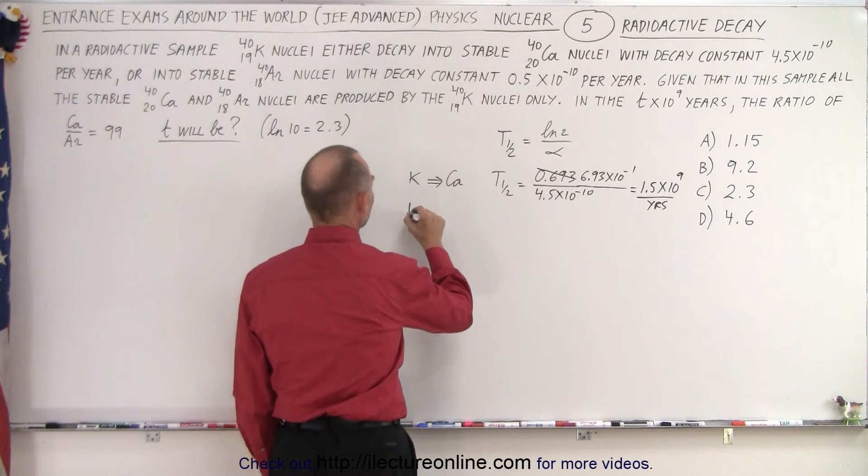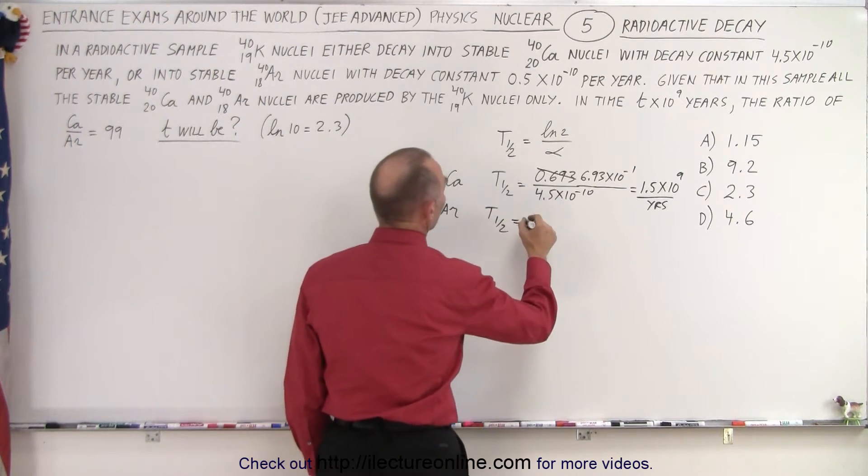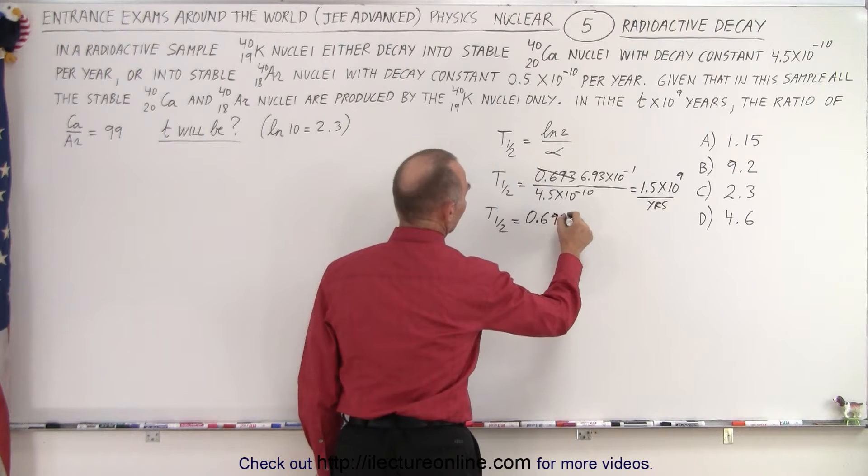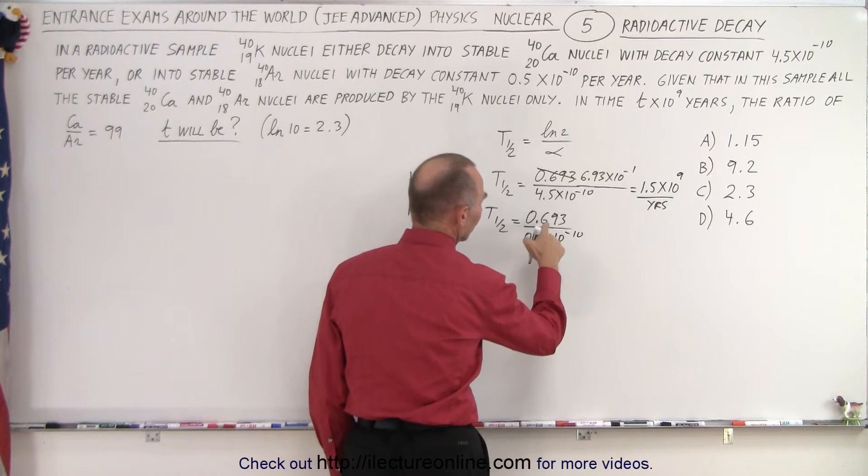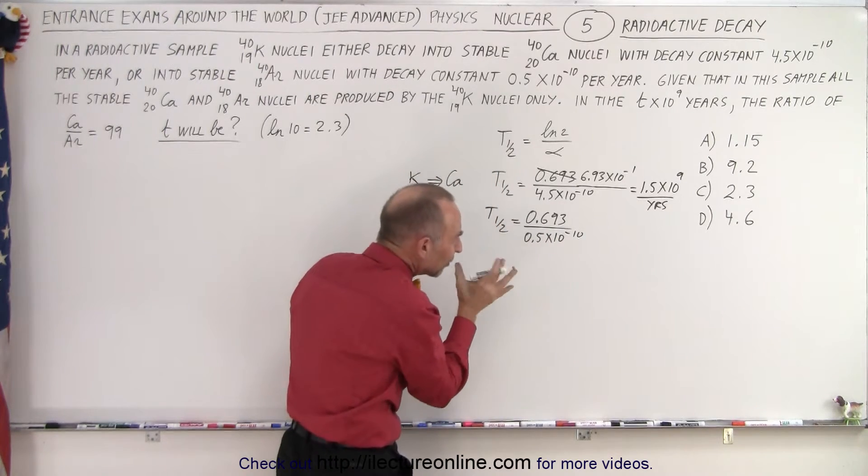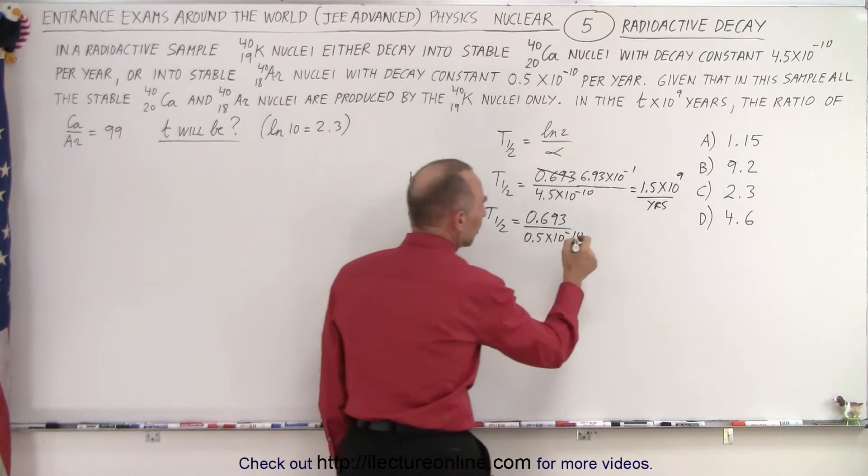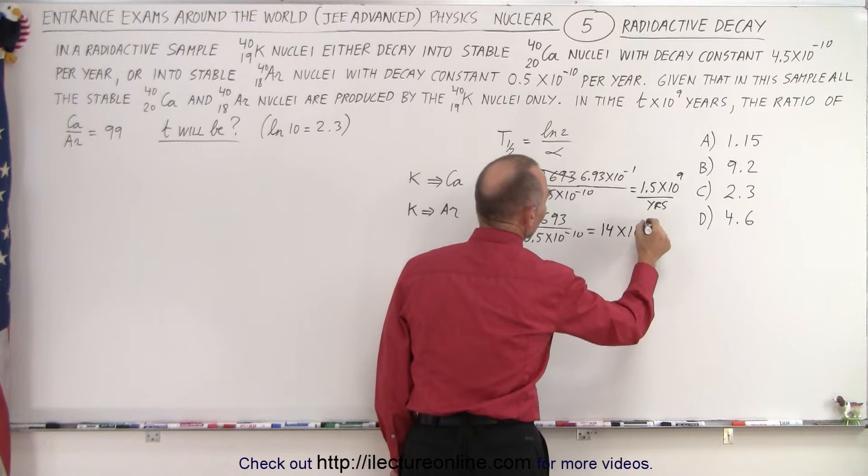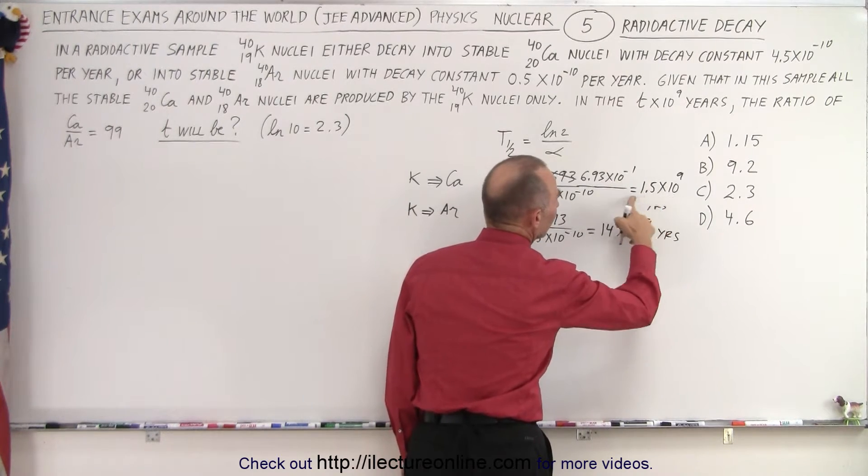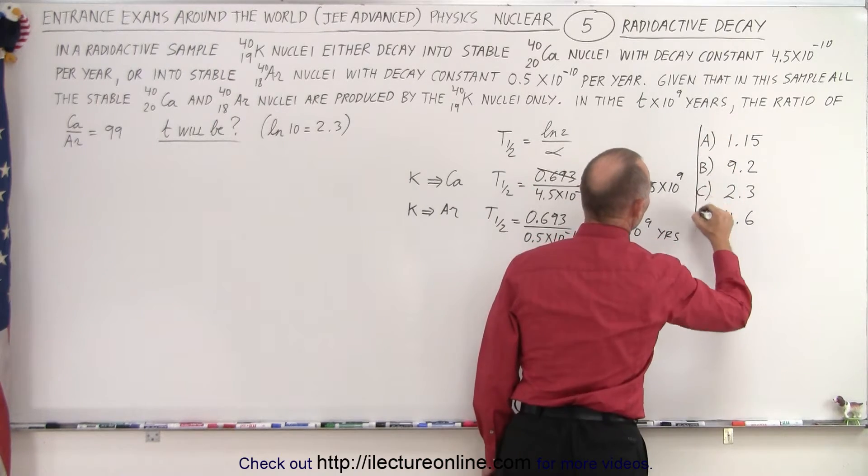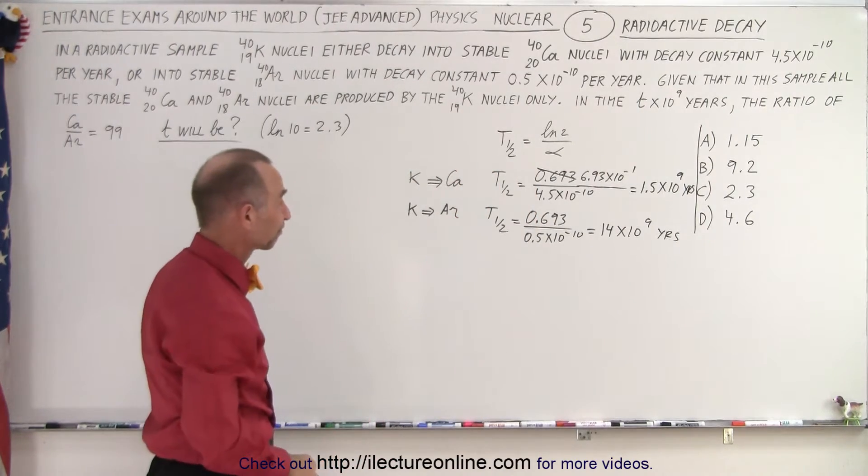And then if we go from potassium to argon, the half-life is equal to 0.693 divided by 0.5 times 10 to the minus 10. So 0.5 goes into 0.693, that's about 1.4 times 10 to the 10th. So that would be about 14 times 10 to the 9th years. Should put it like that so we don't get confused.